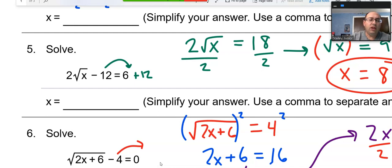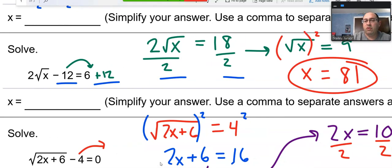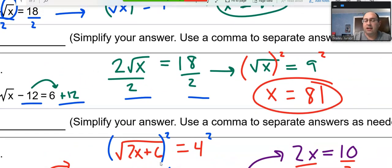Question 5, we had two things to do. First, we added the 12 over to the other side. Then we divided by the 2 on both sides. And then we were able to square both sides and get the 81. So, had to do a few things, but not too terribly difficult.